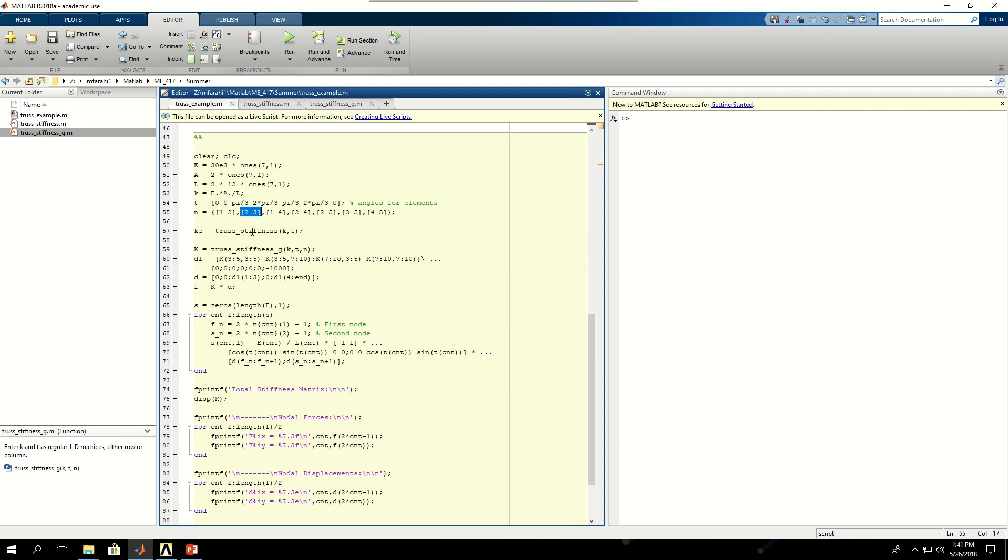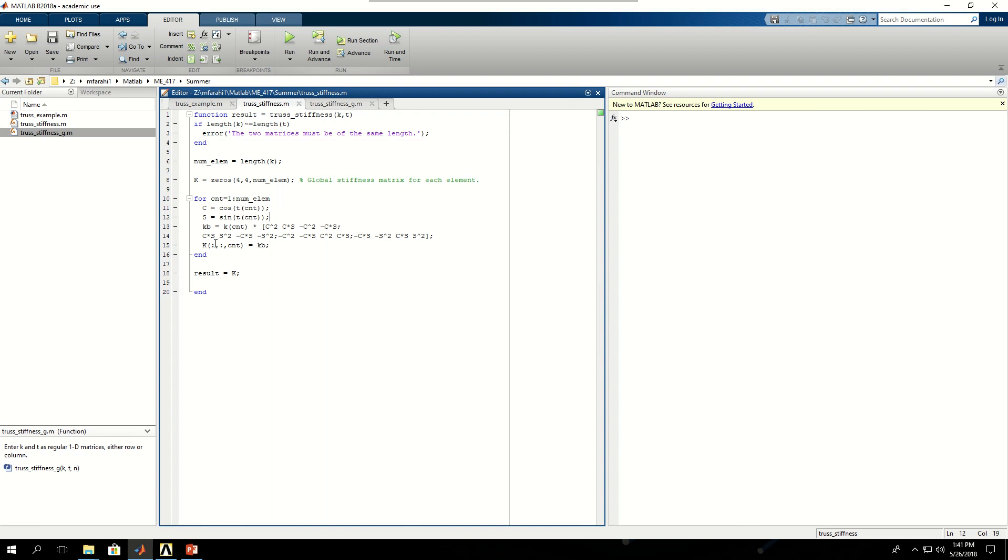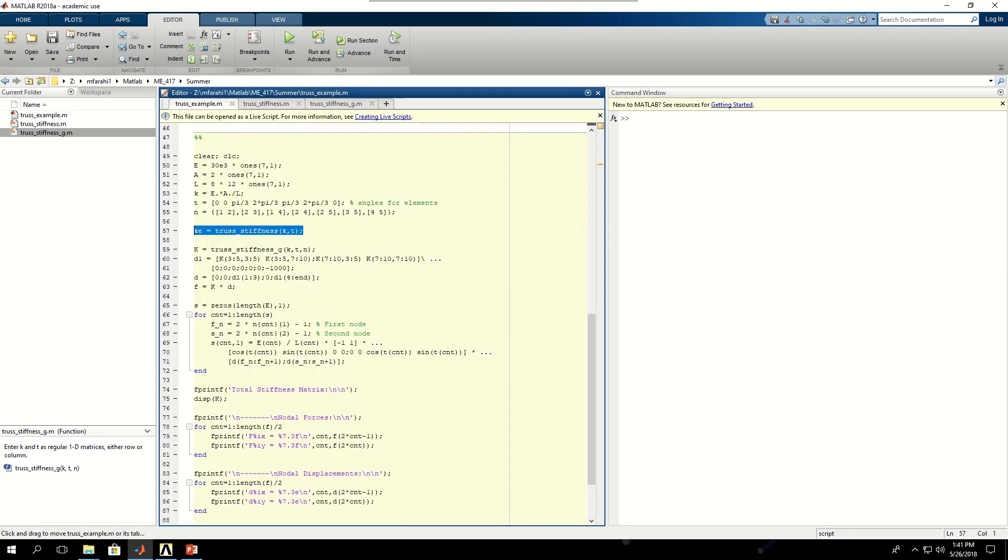Then I have defined a MATLAB function file, truss_stiffness_k, which gives me the global stiffness matrix per element, which is in here. Here, if you remember those cos squared cosine minus cos squared minus cosine, I have used them in here to create the global stiffness matrix per element, which would be the output here. And what it takes is the k that I've defined up there and t, which are the angles for elements.